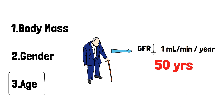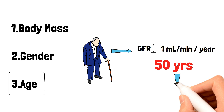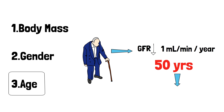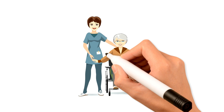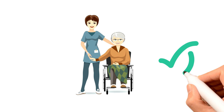When you get older, the kidneys simply do not filter as efficiently. Therefore, when administering a drug exclusively cleared by the kidneys to elderly patients, we should be aware of the GFR. If not, the drug will remain in the patient's serum much longer than expected.